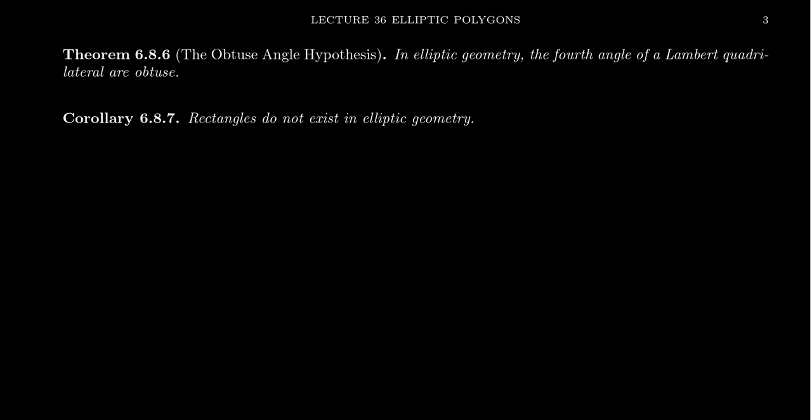And I should also mention that this shows that in elliptic geometry there are no rectangles. So there's no rectangles in hyperbolic geometry or elliptic geometry. They only exist in Euclidean geometry and their existence is actually equivalent to that Euclidean parallel postulate. I want to talk a little bit more about triangles in the next video. Stay tuned for that and other consequences of this obtuse angle hypothesis.